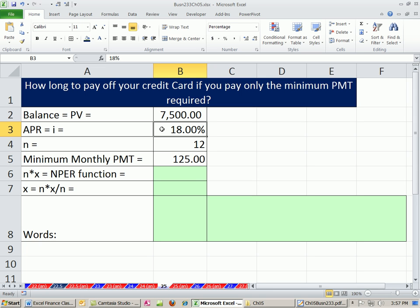If the interest rate is 18% and your number of compounded periods per year are 12, so you're making monthly payments,